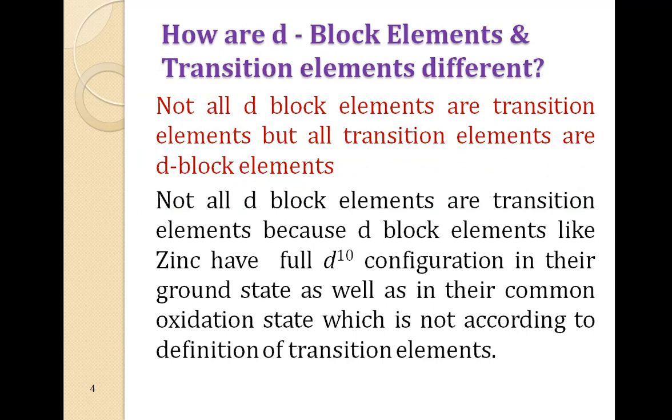Now you must be thinking what is the difference between d-block elements and transition elements, are they the same? No, not all d-block elements are transition elements. If you take the example of zinc, the electronic configuration of zinc is 4S2, 3D10, D10 means completely filled orbital and zinc exists in plus 2 oxidation state.